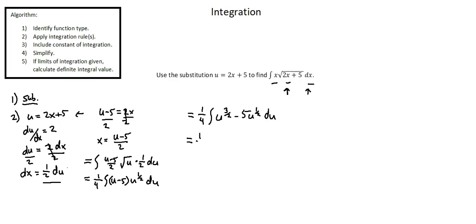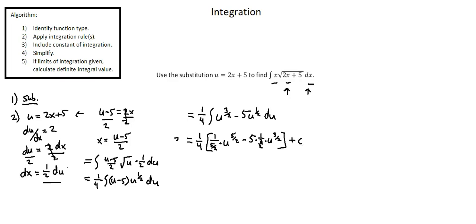Now we'll perform integration. 1 fourth times the first term: u to the power of 3 over 2 is going to become u to the power of 5 over 2, and we multiply by 1 over the new exponent, 5 over 2. Minus: the second term, 5 times u to the power of 1 half, becomes u to the power of 3 over 2, and we multiply by 1 over the new exponent, 1 over 3 over 2. And we'll add our constant of integration, plus c. Now we're through step 3 of our algorithm.